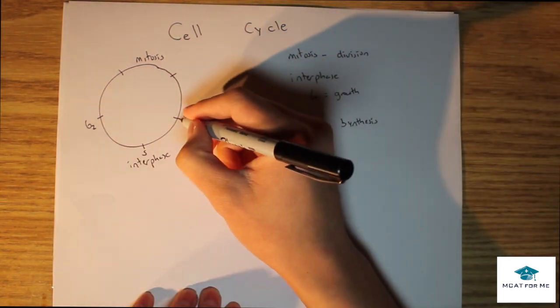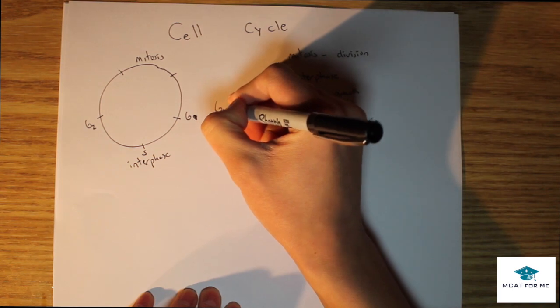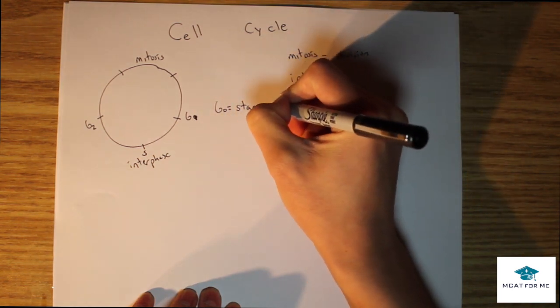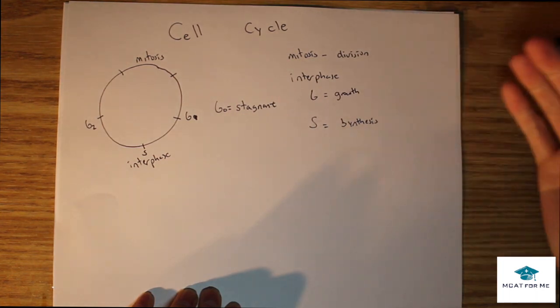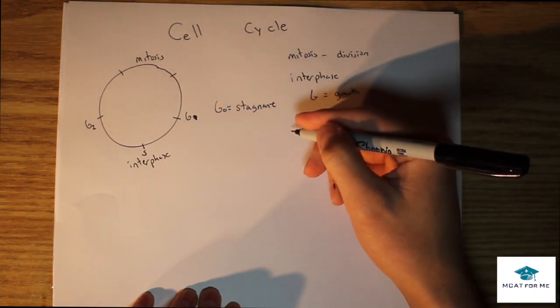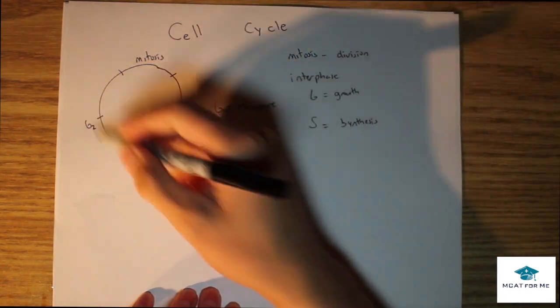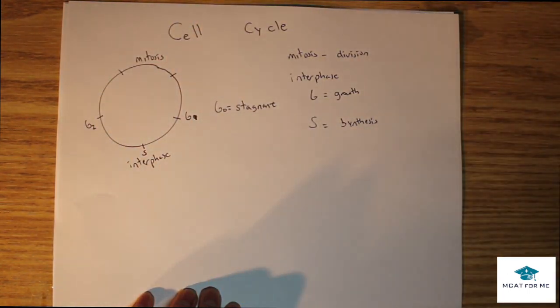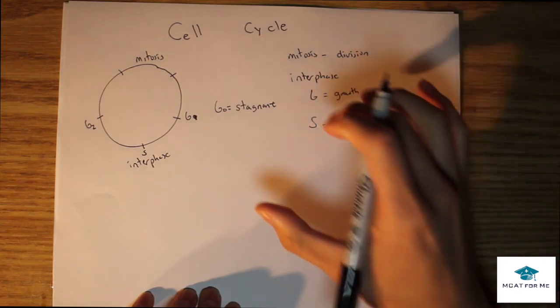This is all when the cell is dividing. We also have something called G0 which is just the stagnant state. If your cells are not dividing at this particular time, then they will be in the G0 phase. But any other time they would be in one of these four: G1, S, G2, or mitosis.